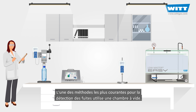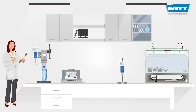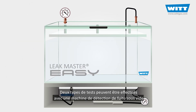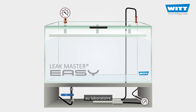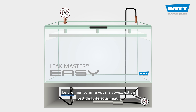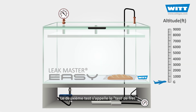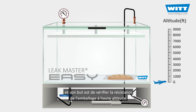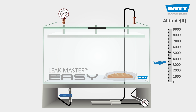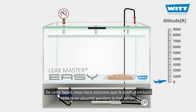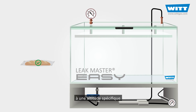One of the most common methods for package leak detection is using a vacuum chamber. Two kinds of tests can be performed with a vacuum leak detection machine in the laboratory. The first is a leak test underwater — when there is a leak, you can see it clearly through small bubbles coming out of the package. The second test is called the Cargo test, and its purpose is to check the package's resistance to high altitude, ensuring the product package remains safe during air freighting at specific altitudes.